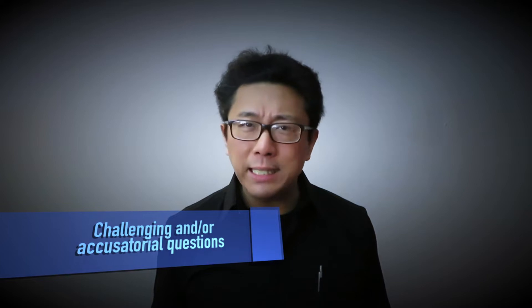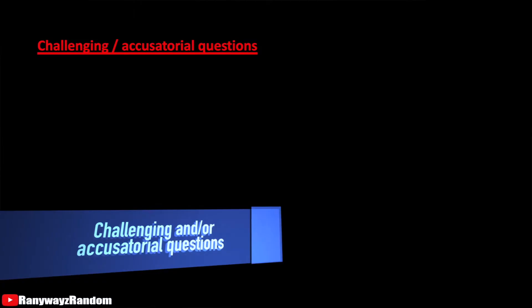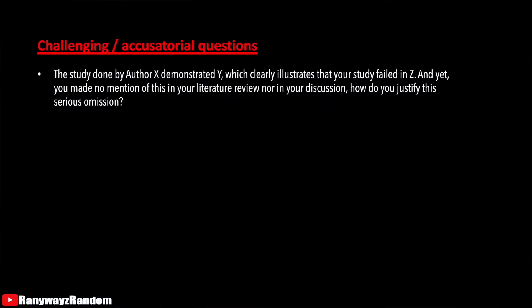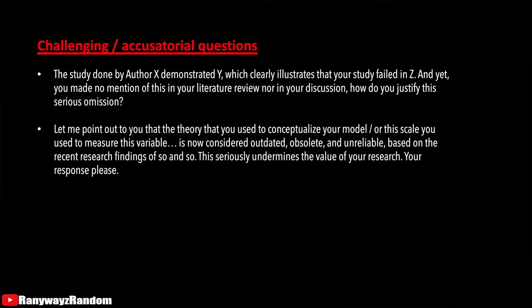The final and third category of common thesis defense questions — what many would consider the most difficult type — would be challenging and accusatorial questions. These are asked by professors to point out something they believe was not correct, either things they view as incorrectly done or important omissions. For example: 'The study done by author X demonstrated Y, which clearly illustrates that your study failed in Z, and yet you made no mention of this in your lit review nor in your discussion. How do you justify this serious omission?' Another example: 'The theory you used to conceptualize your model, or this particular scale you used to measure this variable, is now considered outdated, obsolete, or unreliable based on recent research findings. This seriously undermines the value of your research. Your response, please.'